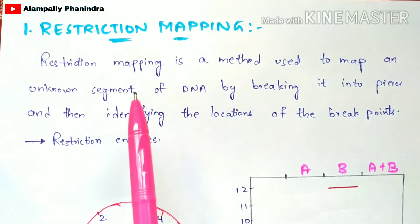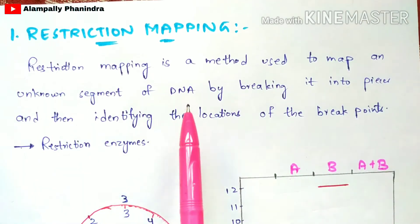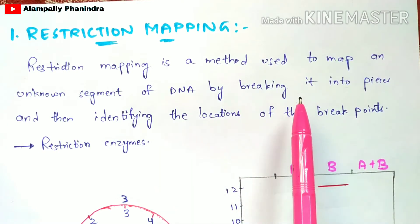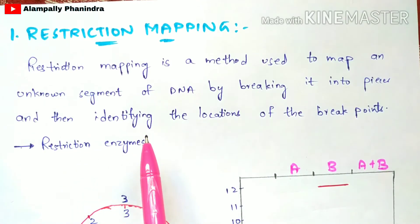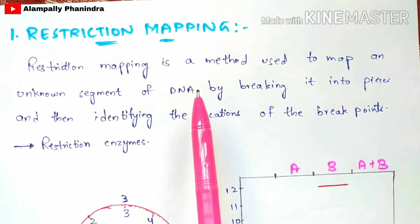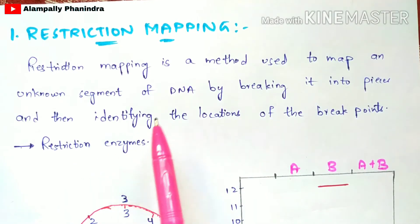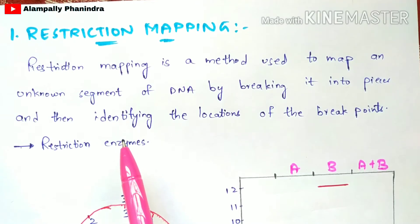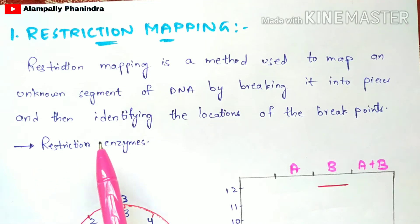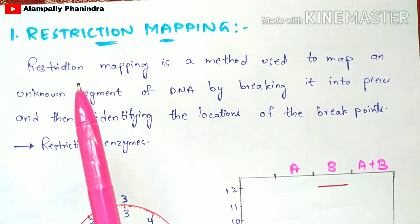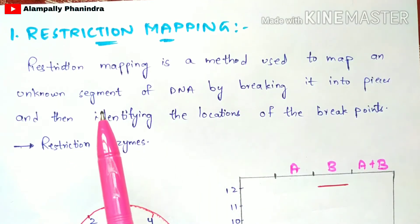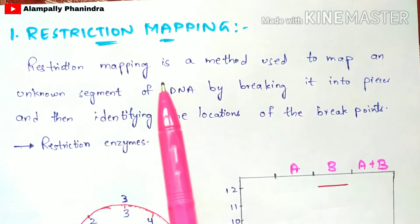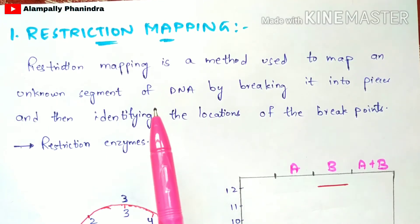Restriction mapping is a method used to map an unknown segment of DNA by breaking it into pieces and identifying the locations of the break points. This DNA gets broken into pieces using restriction enzymes, which bind to particular sites on the DNA called restriction sites. Once restriction enzymes bind to the restriction sites, the DNA gets broken into pieces. Gel electrophoresis is also applied in restriction mapping to know the distance between the genes.